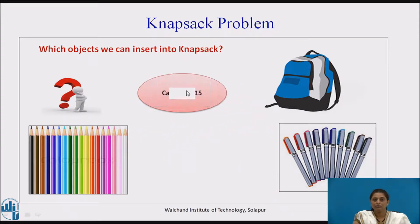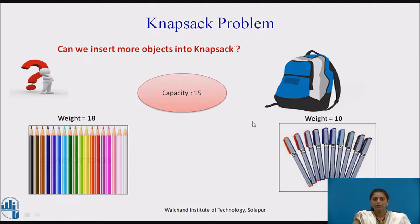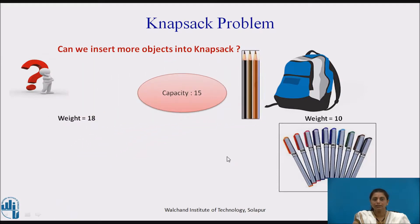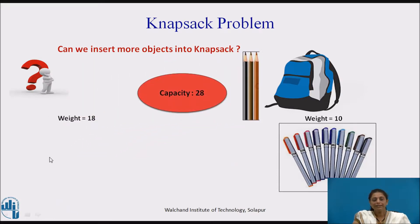First we will place the second object. Its weight is 15 and the capacity of the knapsack is 20, so we can completely fill the object into the knapsack. Now let us try to insert one more object. The weight of the first object is 18, and since we have already placed the second object, the total weight becomes 28, which is greater than the knapsack capacity, so we cannot completely put both objects in.